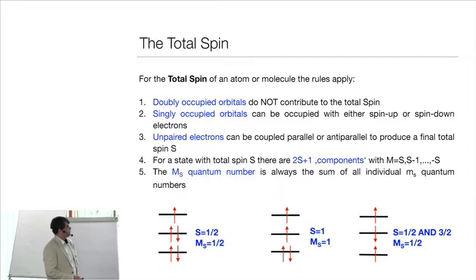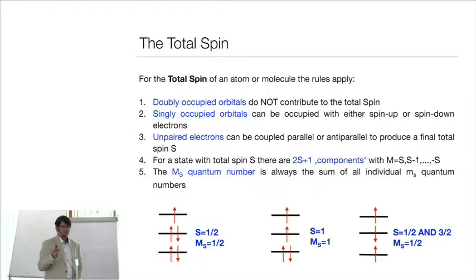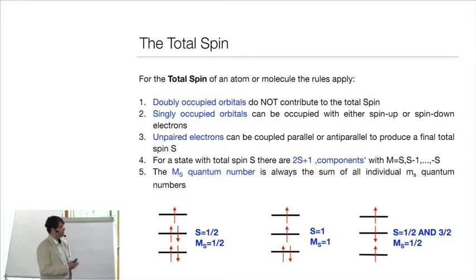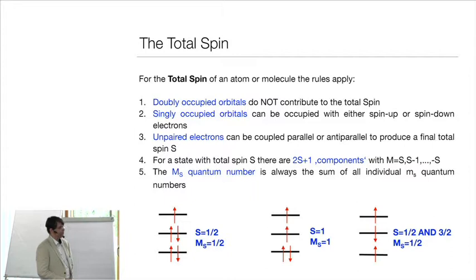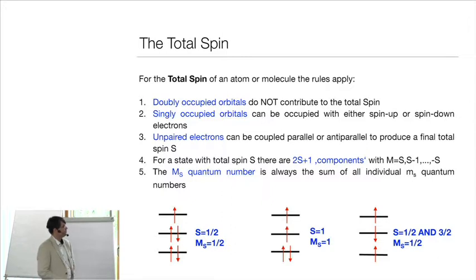Singly occupied orbitals can be occupied with either spin-up or spin-down electrons. These unpaired electrons can be coupled parallel or anti-parallel to produce a final total spin S. For a state with total spin S, there are 2S+1 magnetic sublevels labeled by quantum number M_S, taking values from S down to −S. At the level of the Born-Oppenheimer Hamiltonian, all of those 2S+1 components are degenerate. It is only when relativistic effects or magnetic fields are turned on that this degeneracy is lifted.